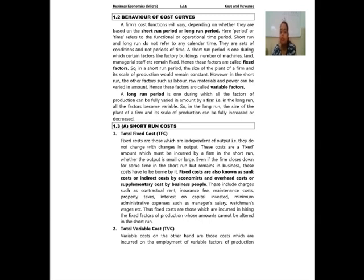In the short run, other factors such as labour, raw materials, and power can be varied in amount — these are called variable factors. A long run period is one during which all factors of production can be fully varied in amount by a firm. That is, in the long run, all factors become variable, and the size of the plant and its scale of production can be fully increased or decreased.